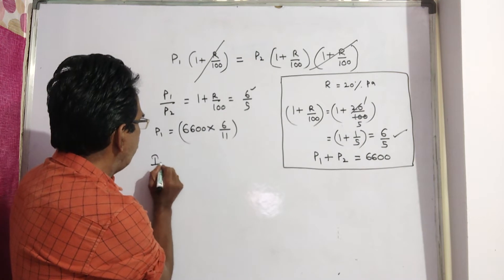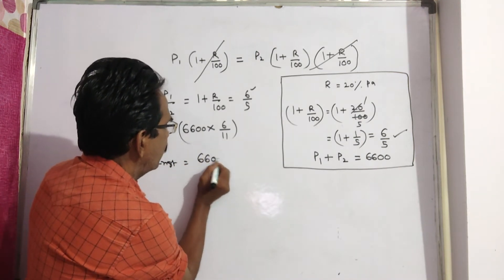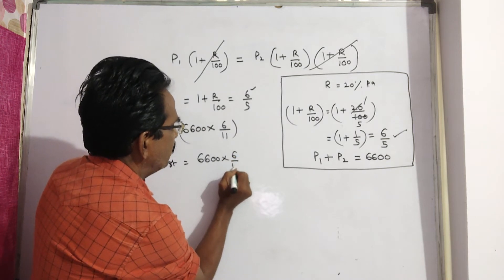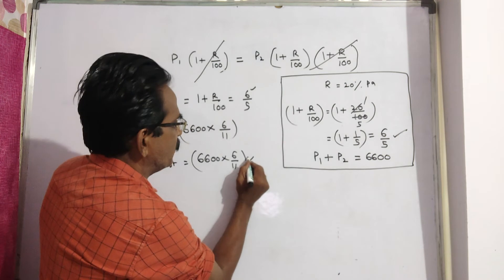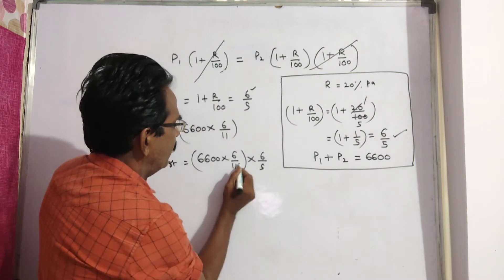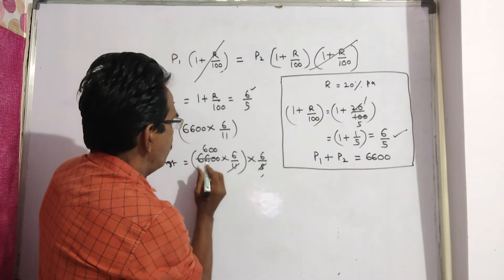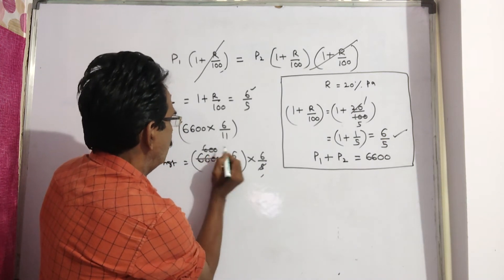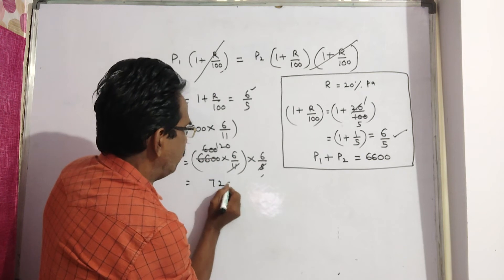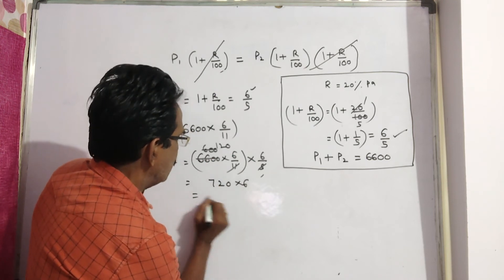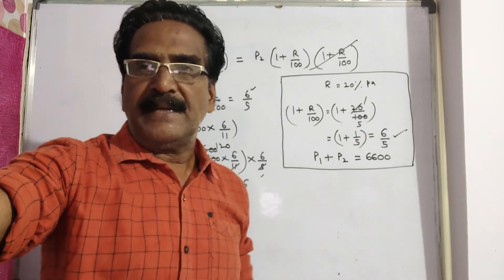The installment value equals P1 into 1 plus R by 100, which is 6 by 5. So that is 6600 multiplied by 6 by 11, multiplied by 6 by 5. This gives 720 into 6, which equals 4320. So the value of each installment is rupees 4320.